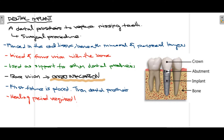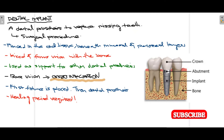Firstly, talking about some basic facts about dental implants: a dental implant is a dental prosthesis used to replace a missing tooth. Missing teeth can be present due to carious problems, periodontal problems, trauma, malignancy, or congenital causes. Dental implant is one option to replace missing teeth, and it is a surgical procedure.